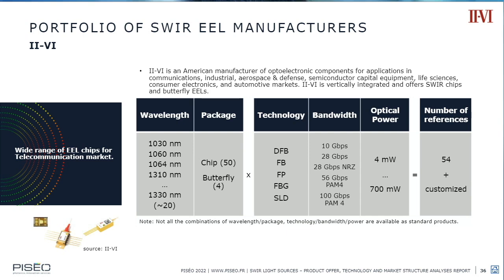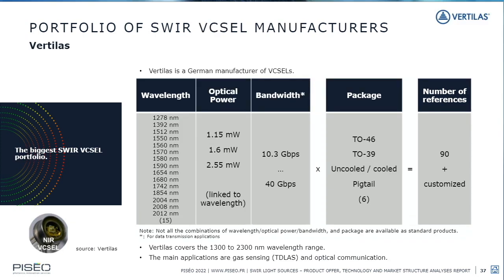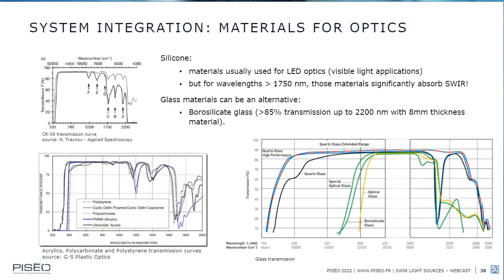Looking at EEL portfolios — for example II-VI (now Coherent) — there is also diversity in wavelengths and parameters, with optical power ranging from 4 milliwatts to 700 milliwatts. For VCSELs, looking at Vertilas' portfolio, there is again diversity in wavelengths, with optical power from 115 to 255 milliwatts — less than EELs.